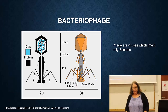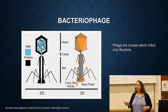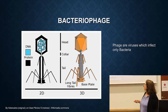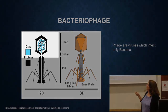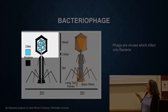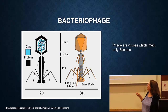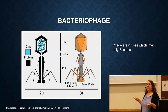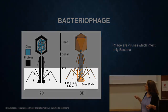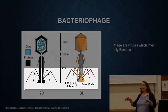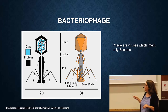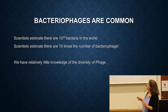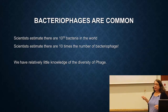The last way in which DNA can be transferred horizontally is using bacteriophage - bacterial viruses that only infect bacteria. Here is a picture of what one looks like: you've got DNA in a head on top surrounded by a protein coat. This region forms essentially a syringe that it uses to inject the DNA into a bacteria. The tail fibers on the side are used to recognize that it's the right kind of bacteria - they're very specific. Bacteriophages are incredibly common. Scientists estimate there are 10^30 bacteria in the world, but they estimate there are 10 times that number of phage.